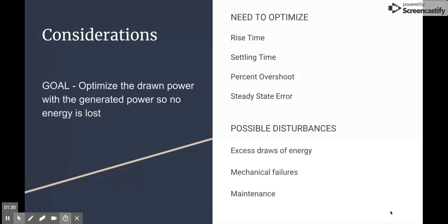Possible disturbances to keep in mind are excess draws of energy, such as power surges, or the opposite when there's almost no load and extra generated power. There could also be a mechanical failure in the power distribution, such as a power line falling due to a storm, which would require maintenance and cut off power to a certain area.